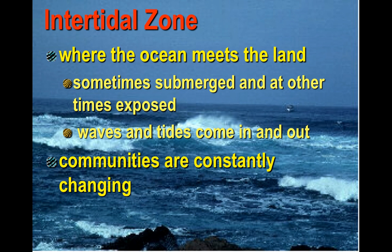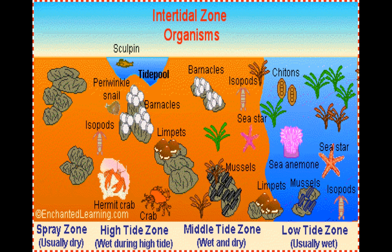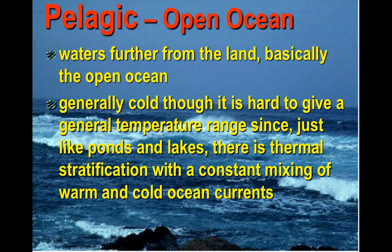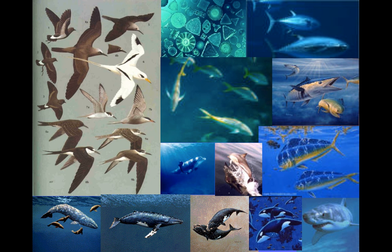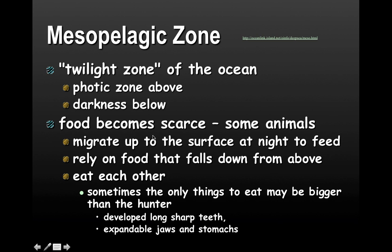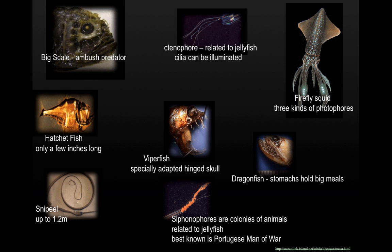The intertidal zone is like a splash zone — where the ocean meets the land. You can see the various animals and vegetation found in that area. The pelagic zone is the open ocean, where you'll find lots of fish and also birds. The mesopelagic is the twilight zone — a little deeper — and here are some of the animals found in that zone.